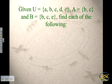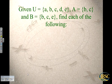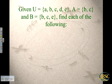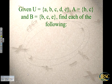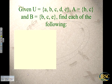The universal set is the letters A, B, C, D, E. Set A equals the letters B, C. Set B equals the set of B, C, E. We want to find each of the following. The first column out of four is to find the complement of A union B.